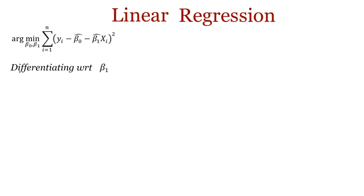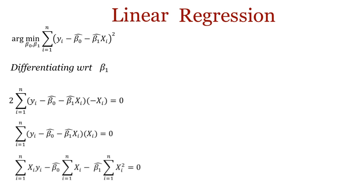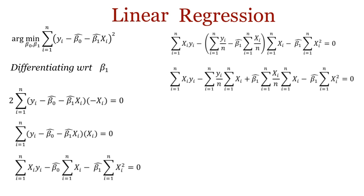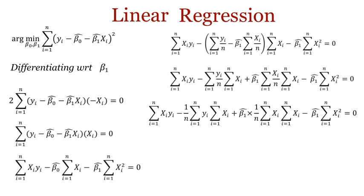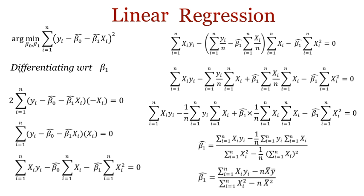Now differentiate the original equation with respect to beta1 using simple partial differentiation rules. Bring the two onto the other side. Expand the bracket, multiplying xi to all terms. Now substitute beta0 hat that we found previously. After some simplification and bringing non-beta1 terms to the other side of the equal sign, you get this equation. Replacing the sample sum with their respective means, we get the final form of the coefficient beta1 estimates.